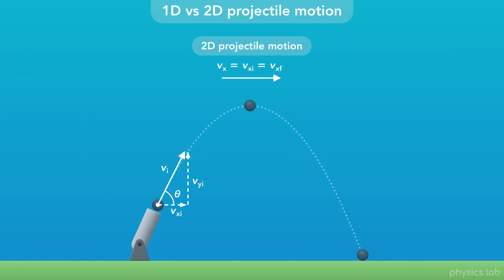In 2D projectile motion, we call the horizontal displacement the range of the projectile motion. That's how far the object travels in the x direction.